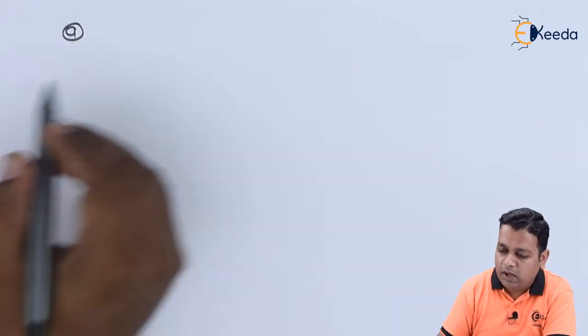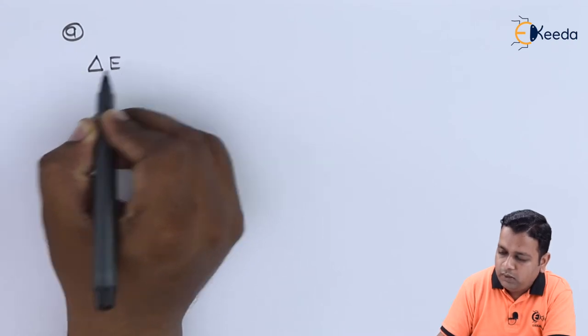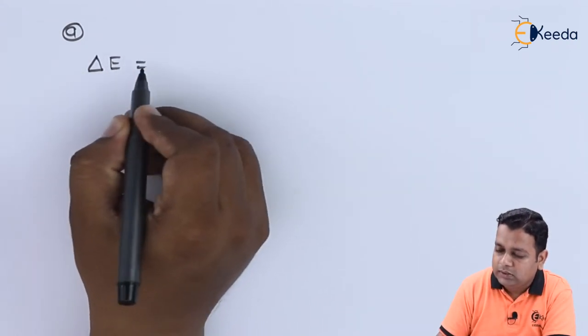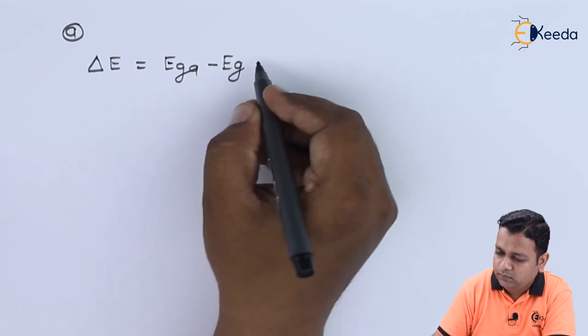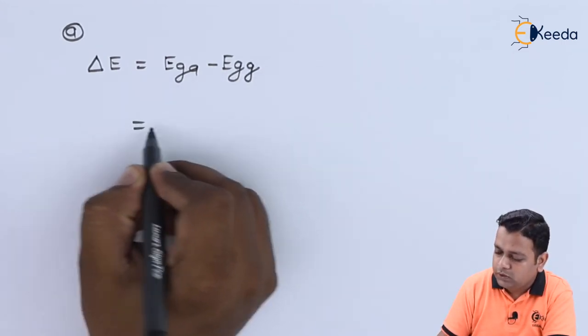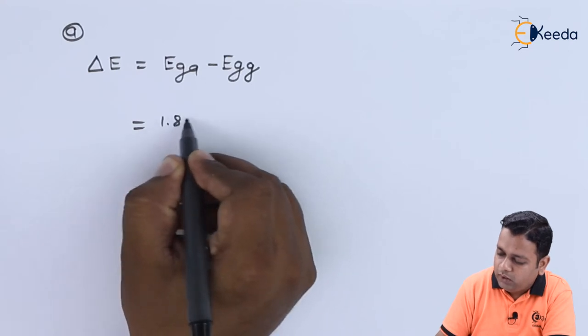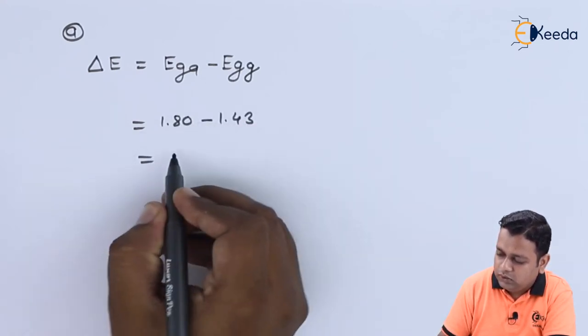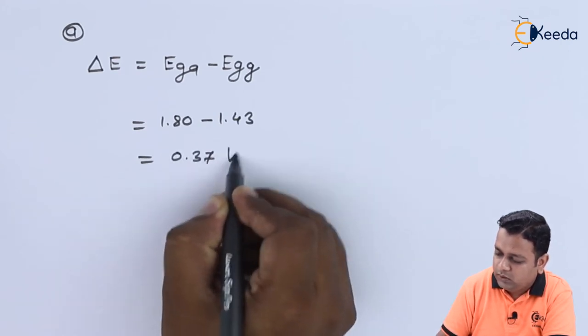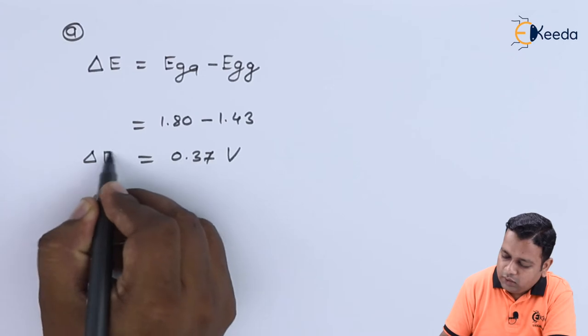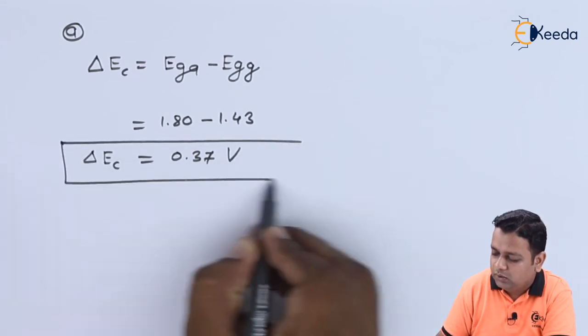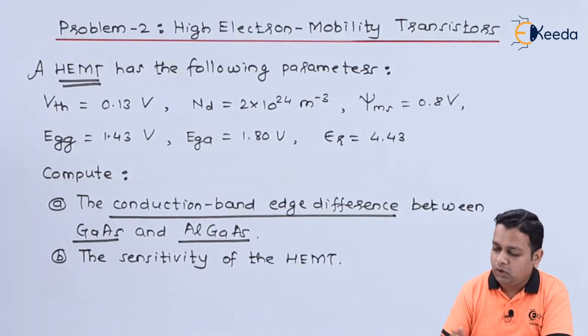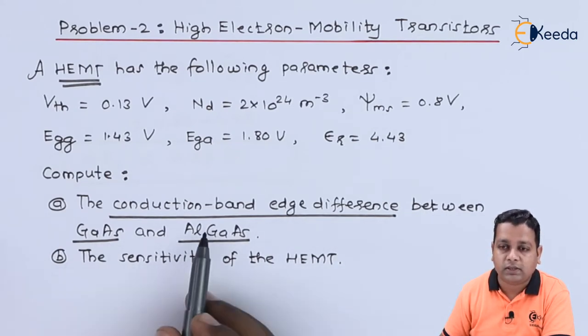The conduction band difference for part A can be denoted by delta E and it is the difference of E suffix GA minus E suffix GG. Substituting the given values: 1.80 minus 1.43. The value is 0.37 volts. I outline this particular value for conduction band energy difference with suffix C.